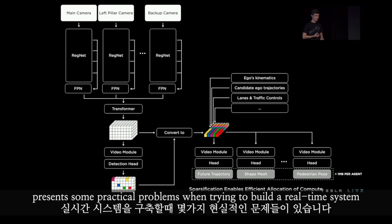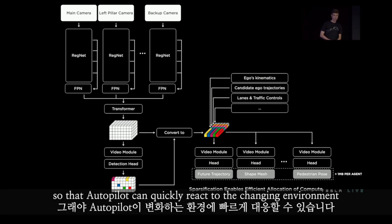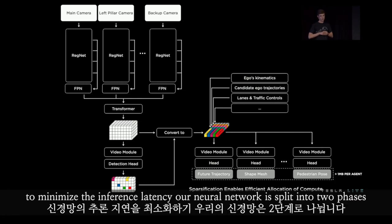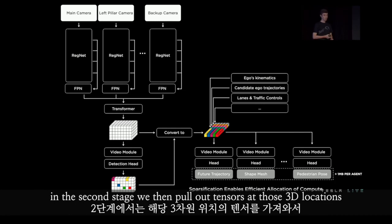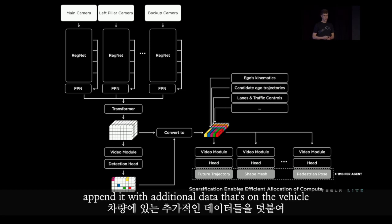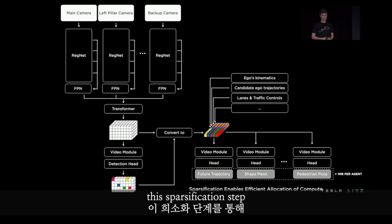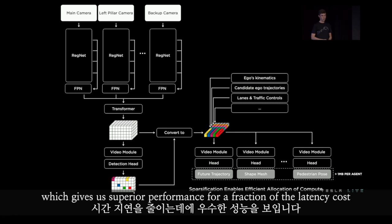Predicting all these agent attributes presents practical challenges for a real-time system. We need to maximize the frame rate of our object detection stack so Autopilot can quickly react to a changing environment — every millisecond matters. To minimize inference latency, our neural network is split into two phases. In the first phase, we identify the locations in 3D space where agents exist. In the second phase, we pull out tensors at those 3D locations, append additional on-vehicle data, and complete the processing. This sparsification step lets the network focus compute on the areas that matter most, giving superior performance for a fraction of the latency cost.